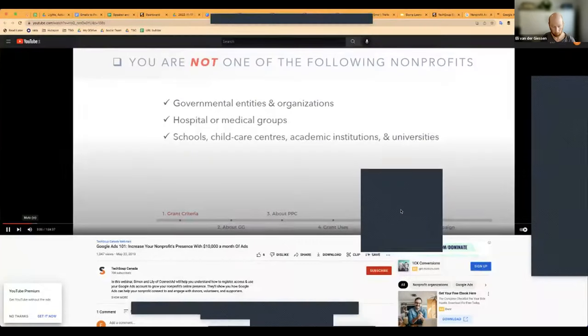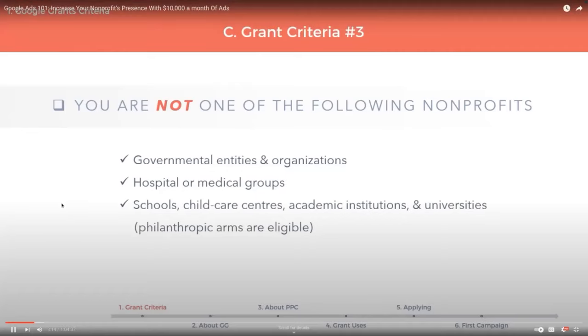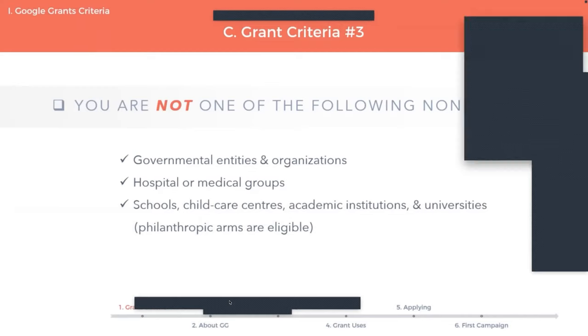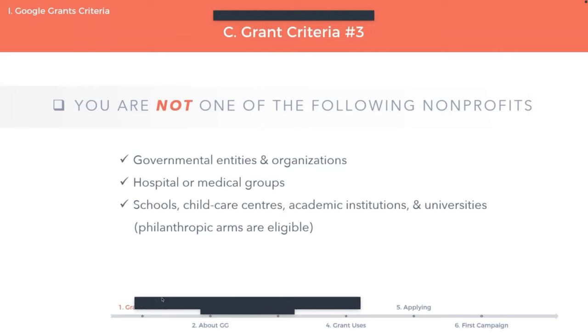You should not be one of the following types of nonprofits. You should not be a government entity or organization. You should not be a hospital. And you should not be a school, a childcare center, an academic institution, or a university. Just to clarify: you can be the philanthropic arms of these institutions — like an educational foundation or a hospital foundation. Also, you can be a medical-related charity, like an autism awareness charity, but they're more looking at actual treatment centers. That's why hospitals are stipulated as not being eligible for the grant.